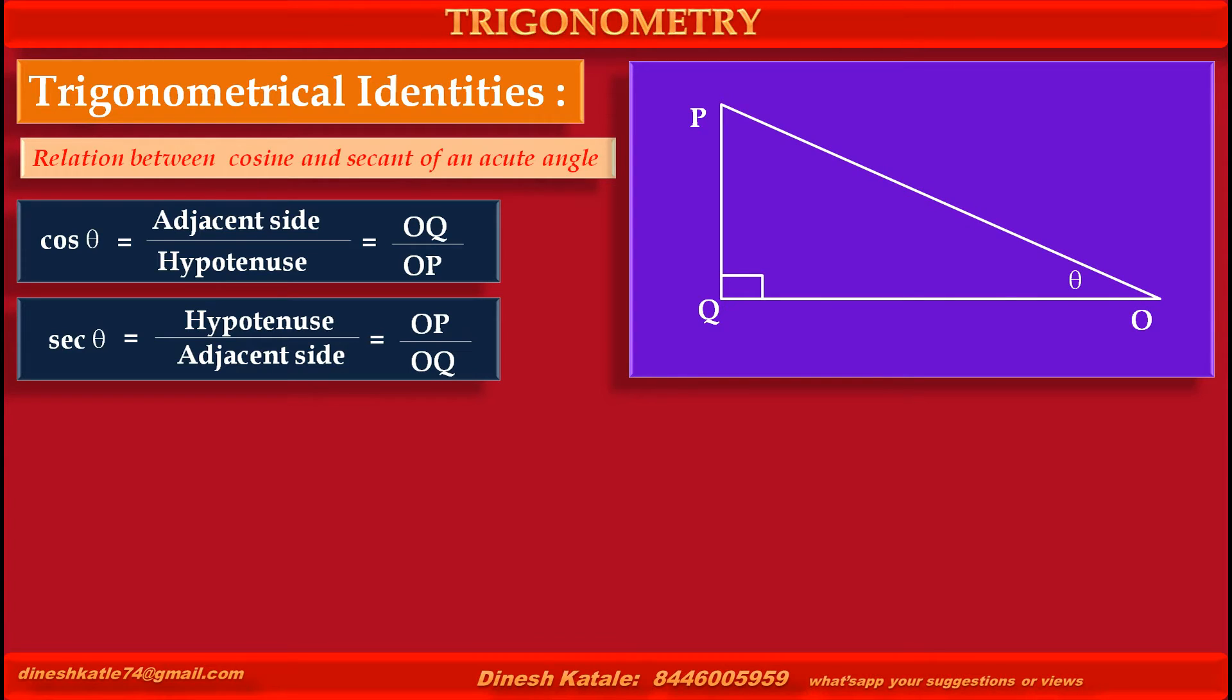So, sec theta equals OP upon OQ. So, the product of these two ratios, cos theta into sec theta, equals the value of cos theta (OQ upon OP) into the value of sec theta (OP upon OQ).